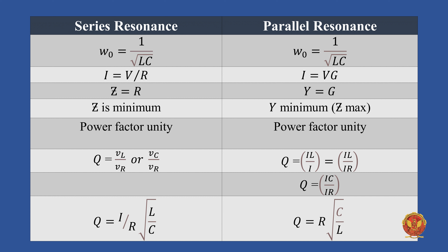In series resonance, the impedance of the circuit is minimum at resonance. In parallel resonance, the impedance of the circuit is maximum at the time of resonance.